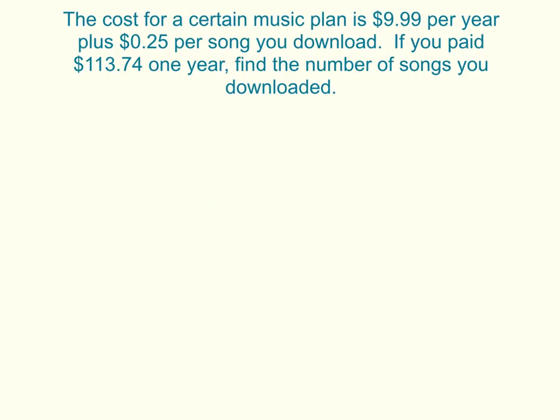Okay, the last question. It says, the cost for a certain music plan is $9.99 per year, plus $0.25 per song. If you paid $113.74 in one year, find the number of songs you downloaded. So I want you to pause the video and see if you can do the full setup and solve for this story problem, and then check your answer when you're done.